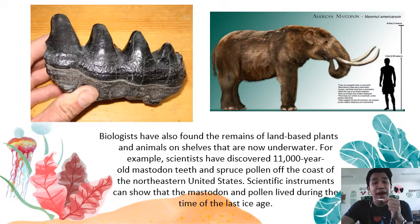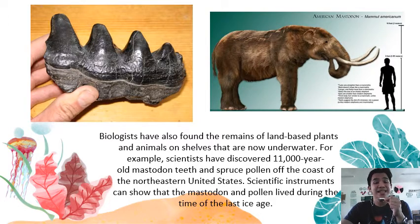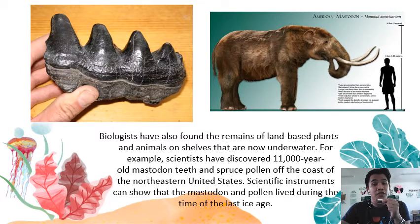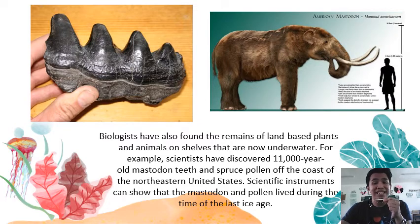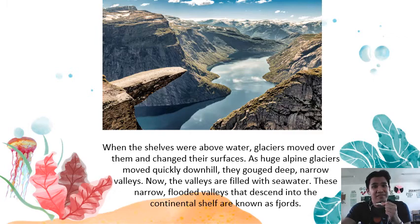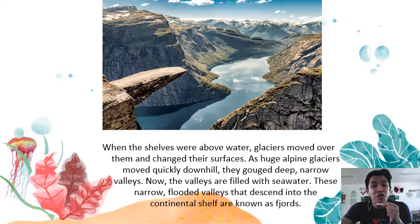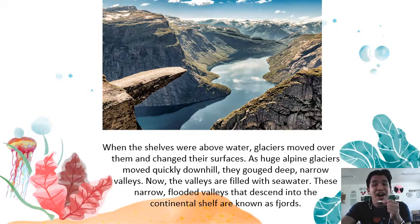Biologists have also found the remains of land-based plants and animals on shelves that are now underwater. Scientists have discovered 11,000-year-old mastodon teeth and spruce pollen off the coast of the northeastern United States, showing that the mastodon and pollen lived during the last ice age. When the shelves were above water, glaciers moved over them and changed their surfaces. As huge alpine glaciers moved quickly downhill, they gouged deep, narrow valleys, which are now filled with seawater. These narrow, flooded valleys that descend into the continental shelf are known as fjords.